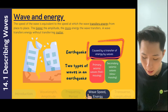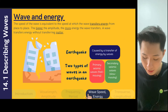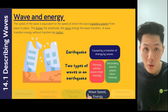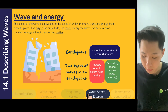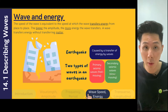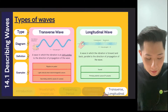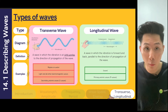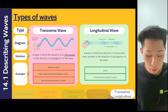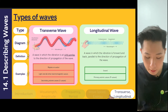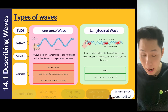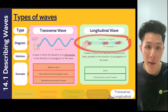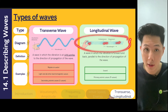An example of wave energy transfer is an earthquake. Earthquakes are caused by the transfer of energy by waves. There are two types of wave in an earthquake: the first one is the primary seismic wave, and the other is the secondary seismic wave — one is fast-moving and the other is slow-moving. These correspond to the different types of wave we will learn.